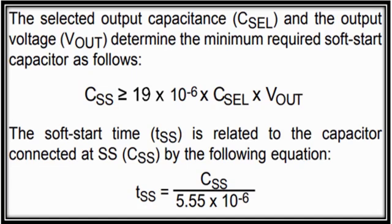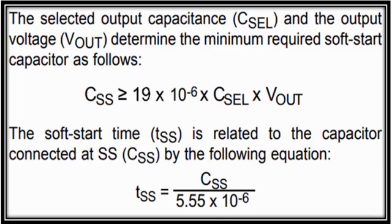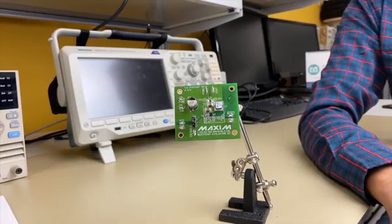By increasing the value of the soft start capacitor, the soft start time is increased which increases the rise time of the output voltage ramp to reach the steady state value. We demonstrate the proposed work using the MAX17501 HTEV kit.